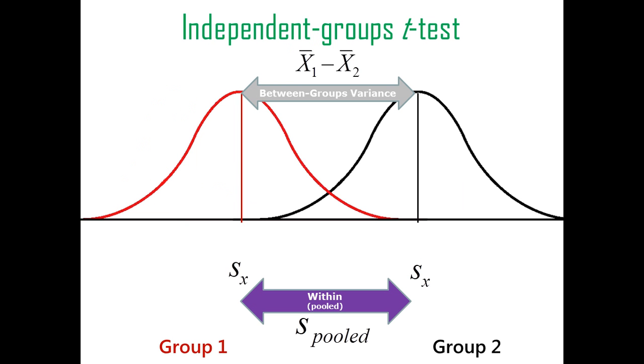So you can compare the between-groups variance to within-groups variance. If there's a lot of between-groups variance, in other words, the means are very far separated, but the within-groups variance is very small, then we trust that that between-groups variance is reflecting something real in the population. But if it's the other way around, then we don't.